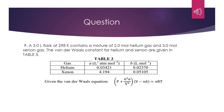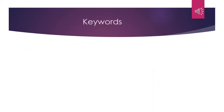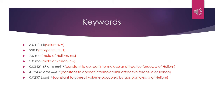The question is: a 3.0 litre flask at 298 Kelvin contains a mixture of 2.0 mol helium gas and 3.0 mol xenon gas. The Van der Waals constants of helium and xenon are given in Table 3. There are 8 keywords in the question: the volume which is 3.0 litre, the temperature which is 298 Kelvin, the mol of helium 2.0 mol, and the mol of xenon 3.0 mol.